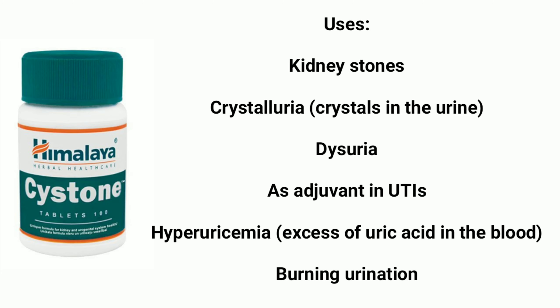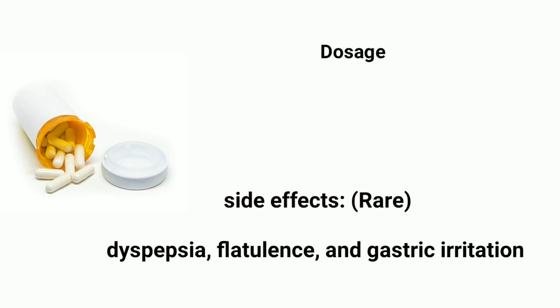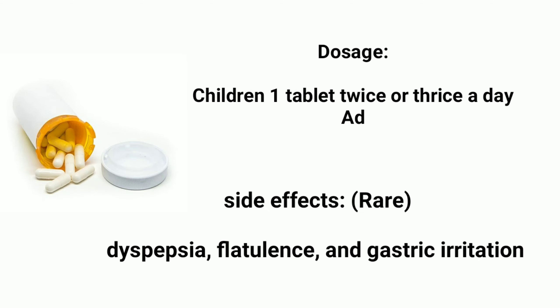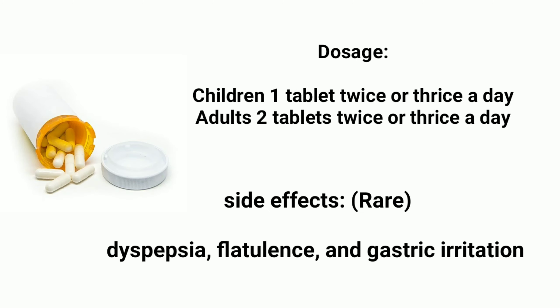Uses: Kidney stones, crystalluria (crystals in the urine), dysuria, as adjuvant in UTIs, and hyperuricemia (excess of uric acid in the blood), burning urination. Dosage: Children — 1 tablet twice or thrice a day; Adults — 2 tablets twice or thrice a day.